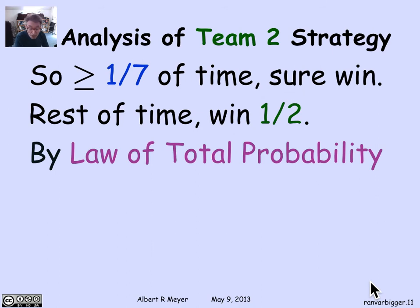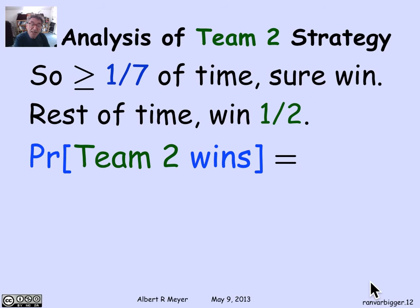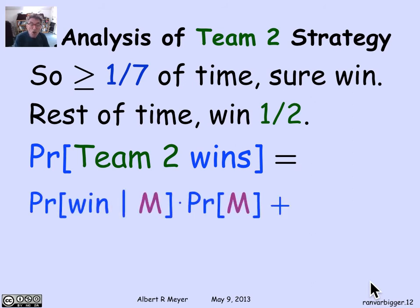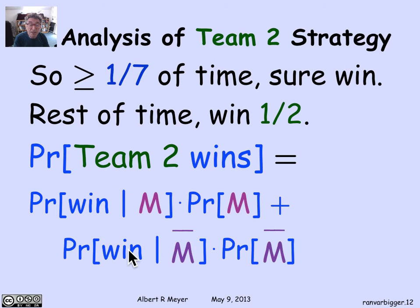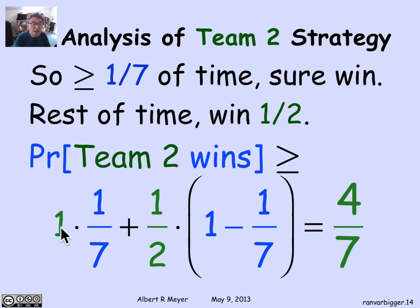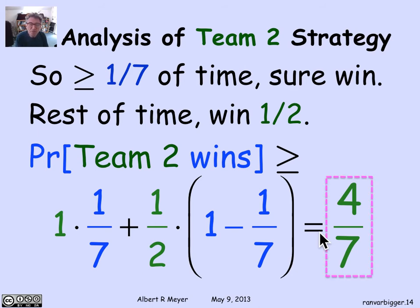Now we apply total probability. The probability that team 2 wins equals the probability of winning given the middle case times the probability of the middle case, plus the probability of winning given not the middle case times the probability of not the middle case. That gives us: 1 × (1/7) + (1/2) × (6/7) = 1/7 + 3/7 = 4/7. The probability that team 2 wins using this strategy is 4/7 — better than 50-50. Team 2 has an advantage.